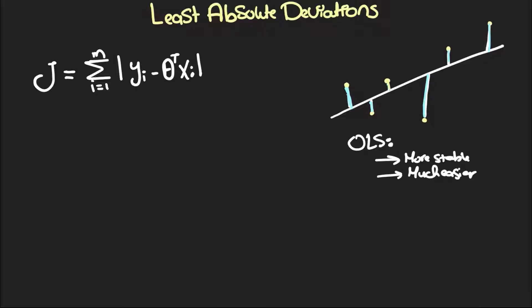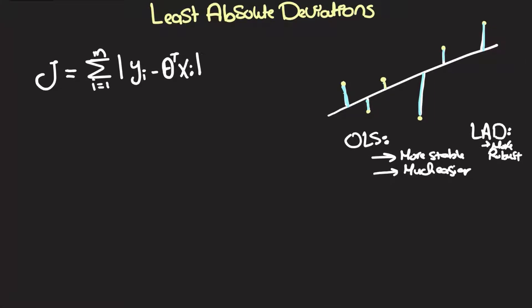Meanwhile, the least absolute deviations approach is more robust. Now, we should be seeking to minimize this cost function, and this is not going to be so easy to do because the derivative of the absolute of any function f of x is equal to the absolute of f of x divided by f of x multiplied by the derivative of f of x. Because if we had f of x all square, then the derivative would be 2 multiplied by f of x multiplied by the derivative of f of x.